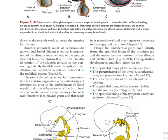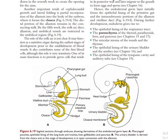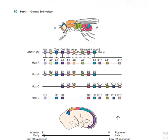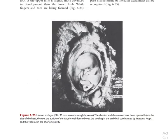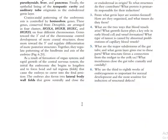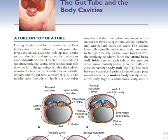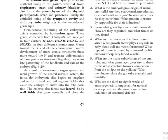The gastrointestinal tract in longitudinal section shows: pharyngeal gut, lung bud, stomach, liver, gallbladder, vitelline tube, allantois, cloaca, hindgut, and all main structures. The pharyngeal gut differentiates into the pharyngeal pouches and pharyngeal arches, which are associated with the different cranial nerve innervations. These represent the main structures involved in general embryology.